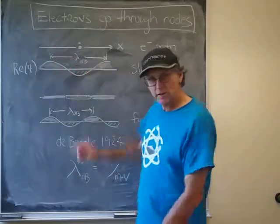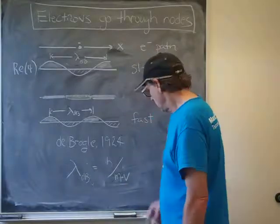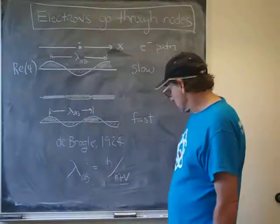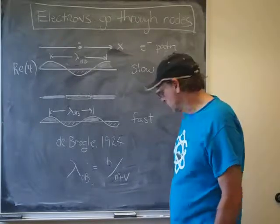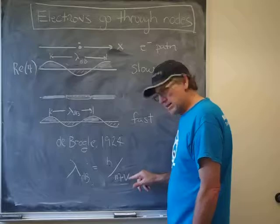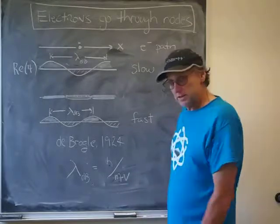That lambda de Broglie, that wavelength, is equal to—you can calculate it—this constant, that's called Planck's constant. That quantity there, the denominator, is the mass of the electron, but the thing I want to focus on is it also has the speed, that V is the speed of the electron, in the denominator.